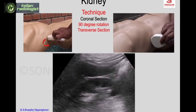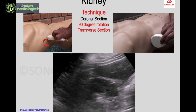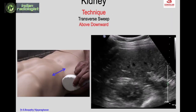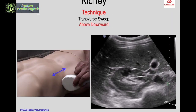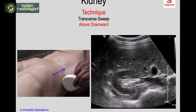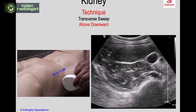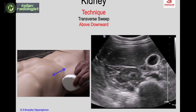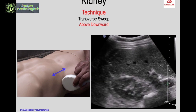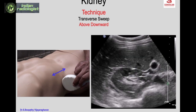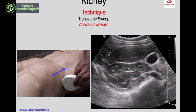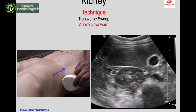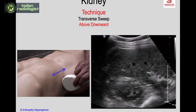Then rotate the probe 90 degrees to get the short axis or transverse axis of the kidney. Once you get the transverse axis — here on the mannequin it is shown from the flank but the video image is from the anterior aspect — go above and downwards in the transverse axis to scan the entire volume. The entire volume of the kidney should be scanned in two planes: either coronal or sagittal, and transverse.